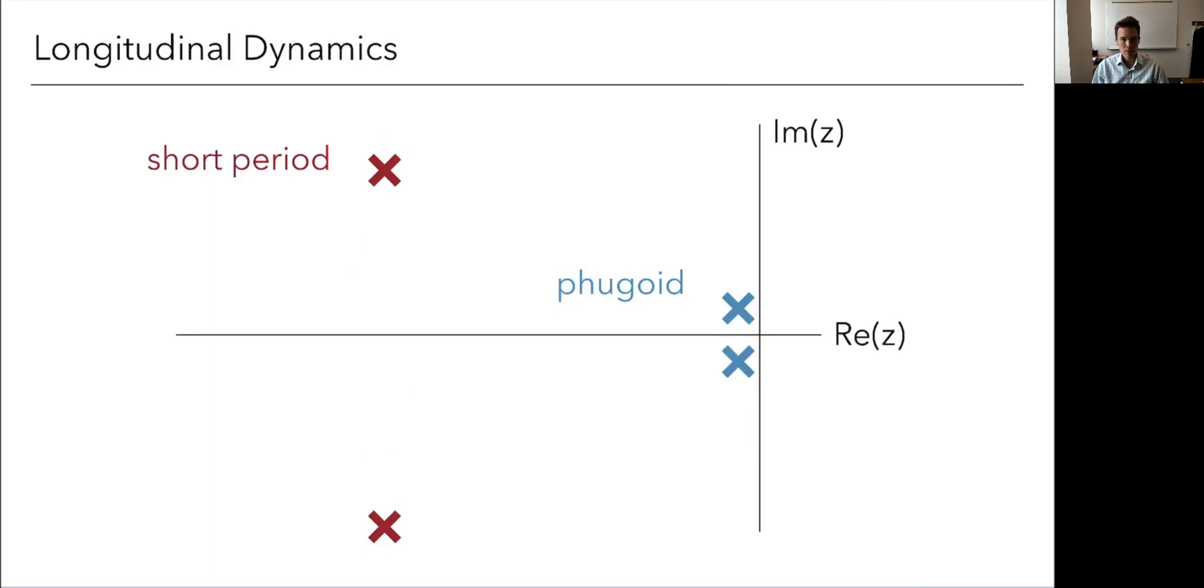This one on the left, we call it the short period mode, and this one that's close to the axis, we call fugoid mode. We're going to look at some figures about what these look like. They're a little bit hard to visualize, but let's just look at them first, and what do you notice, based on what you see where they are, what do you expect the dynamics to look like? And I should say these are the open loop dynamics that we're looking at. We can, of course, modify these with the controller, but these are the general open loop dynamics.